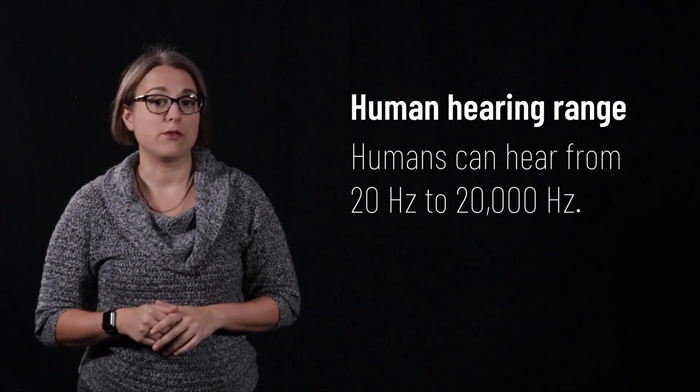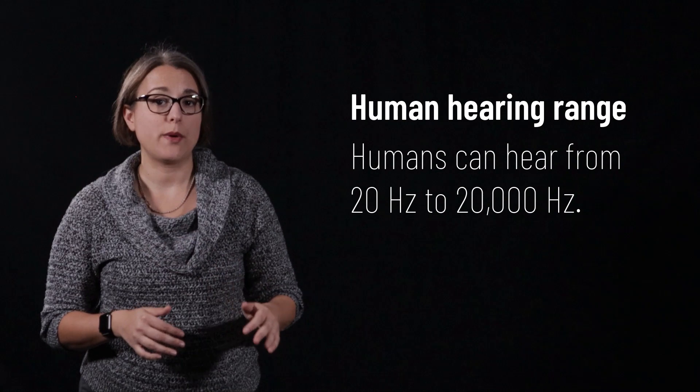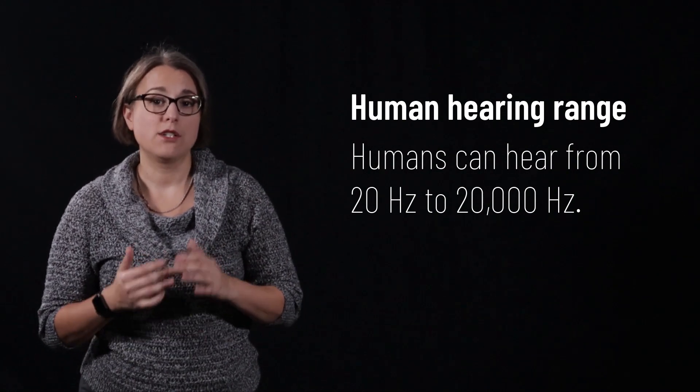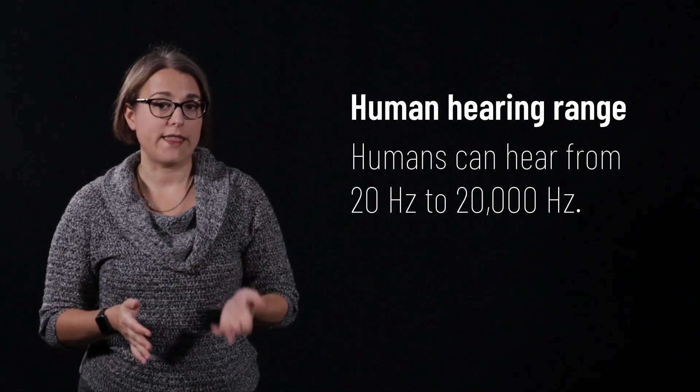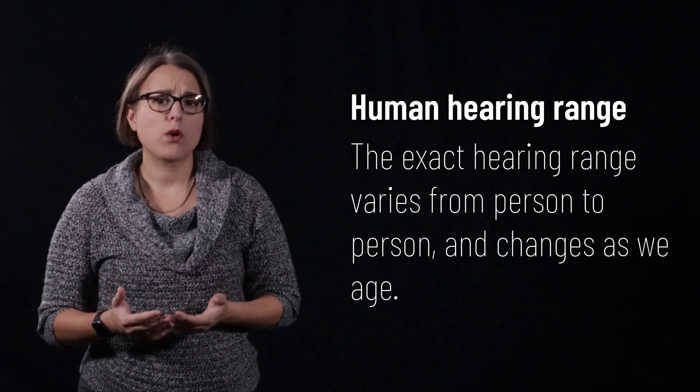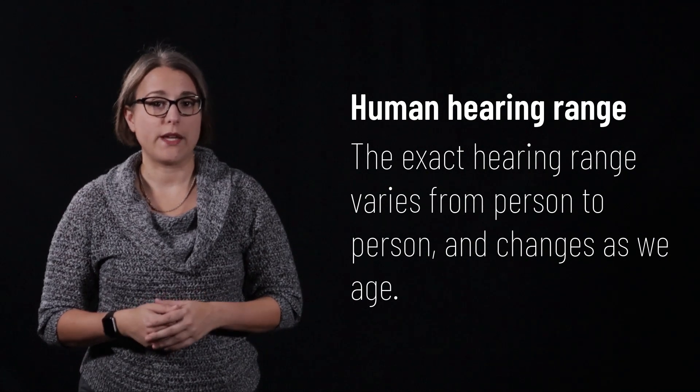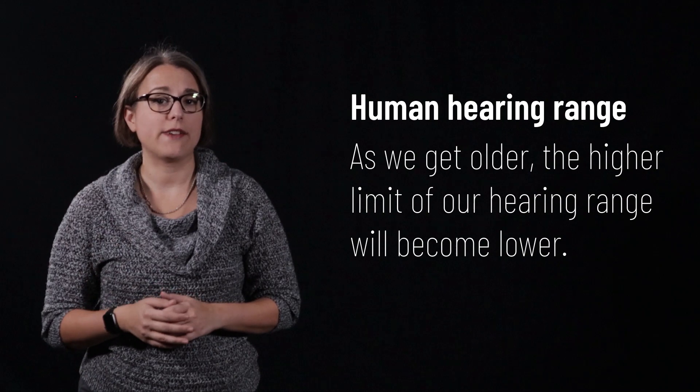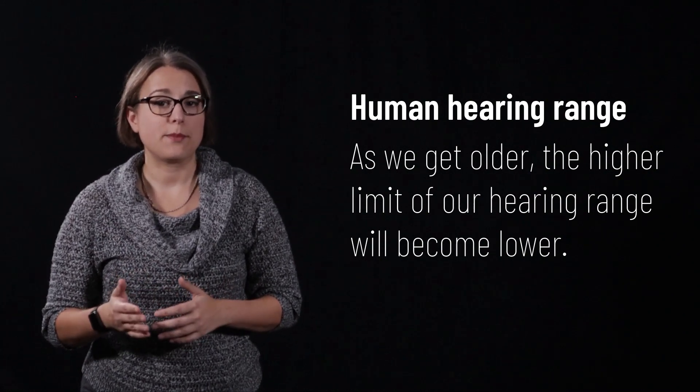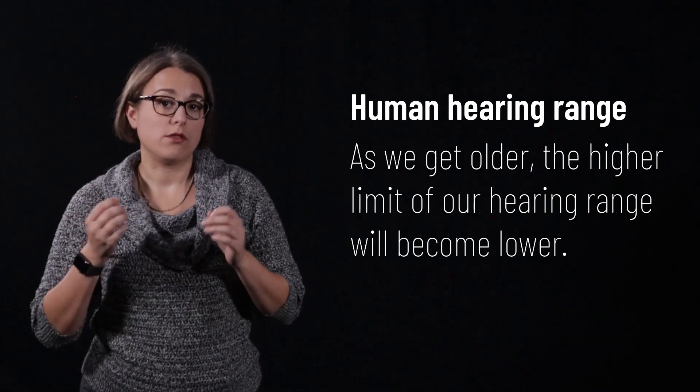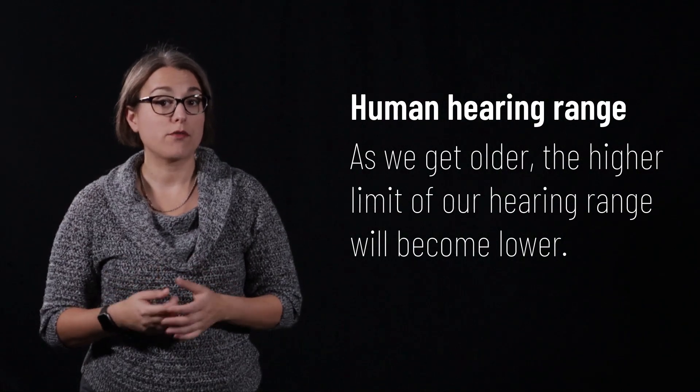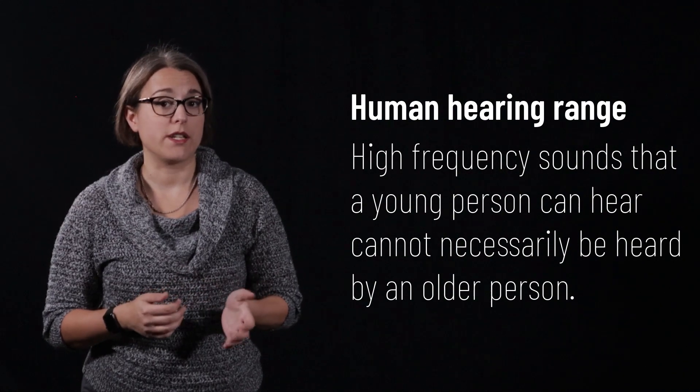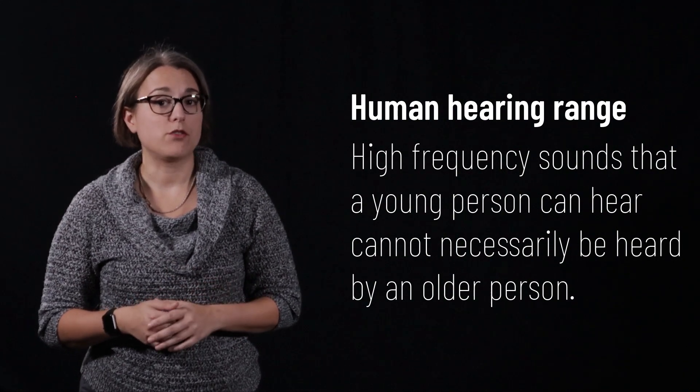Humans are capable of hearing sounds that range from very low pitch to very high pitch. Our range of hearing is approximately 20 hertz to 20,000 hertz. This, of course, varies from person to person, and changes as we age. Starting around 30 years old, the higher range of our hearing starts to degrade. This means that the older you are, the lower the frequency of your upper range of hearing will be. That means a high-pitched noise that bothers a young person may not even be audible to an adult.